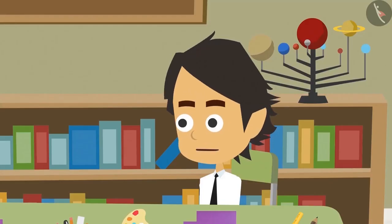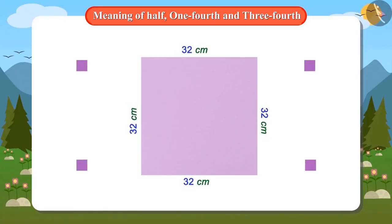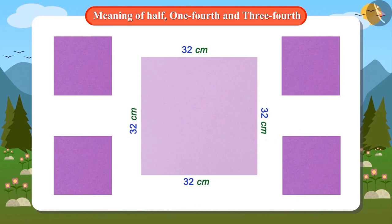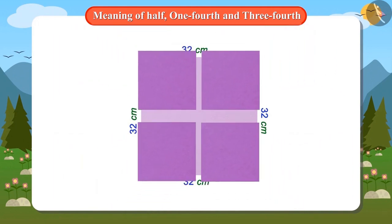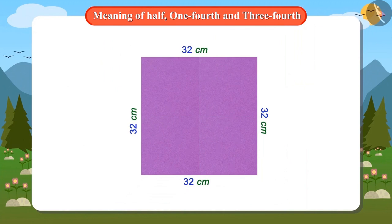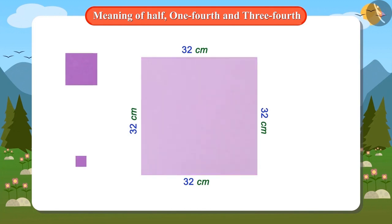Yes, so this means that if we keep the four quarters on top of the object, then the object should be completely covered. Yes. Now look, if we put four pieces equal to what you have made on this cardboard, then it will not be covered completely. Oh yes, it is not completely covered. This means that this part is not a quarter of this entire cardboard.